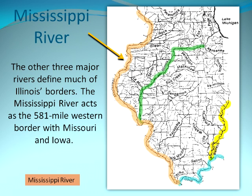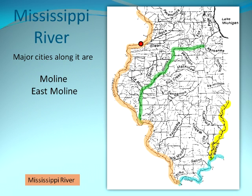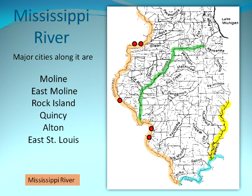The other three major rivers define much of Illinois' borders. The Mississippi River acts as the 581-mile western border with Missouri and Iowa. Major cities along it are Moline, East Moline, Rock Island, Quincy, Alton, East St. Louis, and Cahokia.